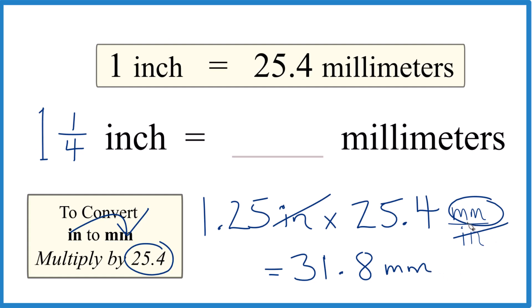That's what we're looking for. So in answer to our question, 1 and 1/4 inches, or 1.25 inches, is equal to 31.8 millimeters. Dr. B, thanks for watching.